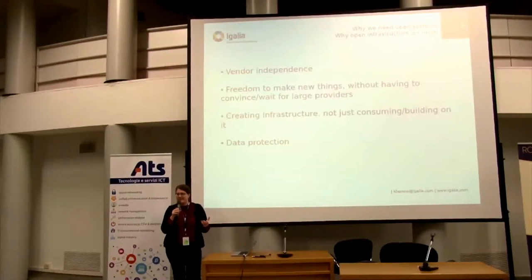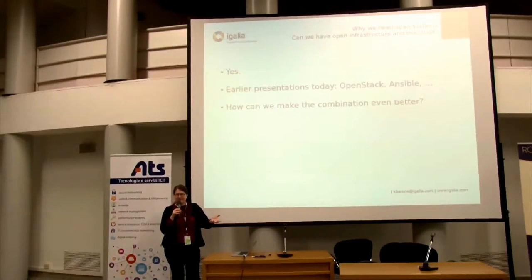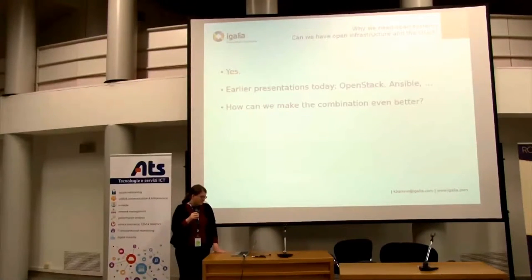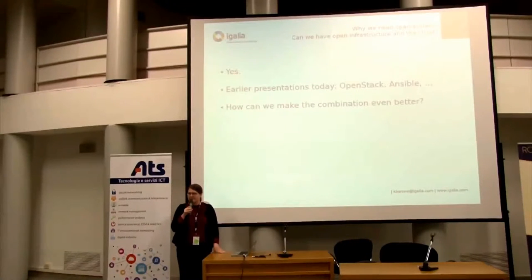Open infrastructure gives us the power to create infrastructure, not just consume it — not just building on whatever some other company decides is a good idea. And running our own clouds gives us more options in terms of data protection. Can we have open infrastructure in the cloud? As most of the other talks today have shown, I think the answer is a clear yes. We can provision things on demand and have flexibility while also having open infrastructure — people have talked about OpenStack, Puppet, Ansible, and quite a number of technologies. So the question then is: what do we want this combination to look like and how do we improve on it?